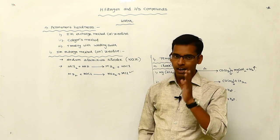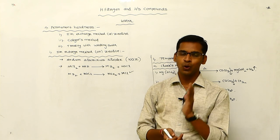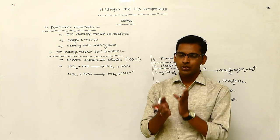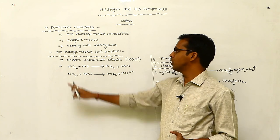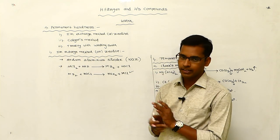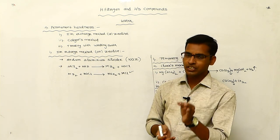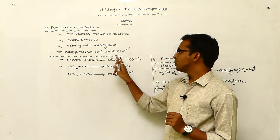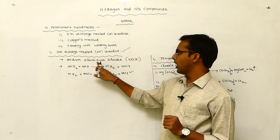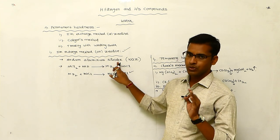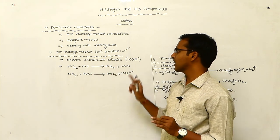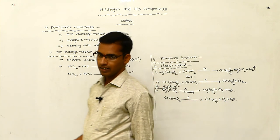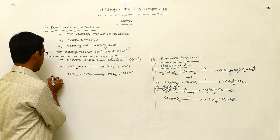In this permanent hardness, water contains chlorides or sulfates. These salts can be removed using the ion exchange method. This ion exchange method is also called zeolite — zeolite means sodium aluminum silicate. This is our first method for removing permanent hardness.